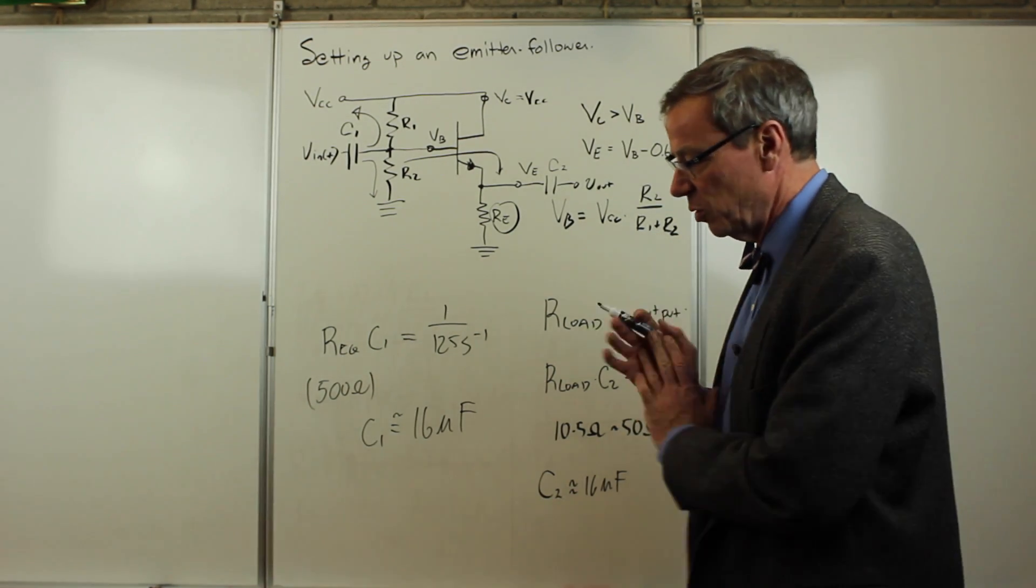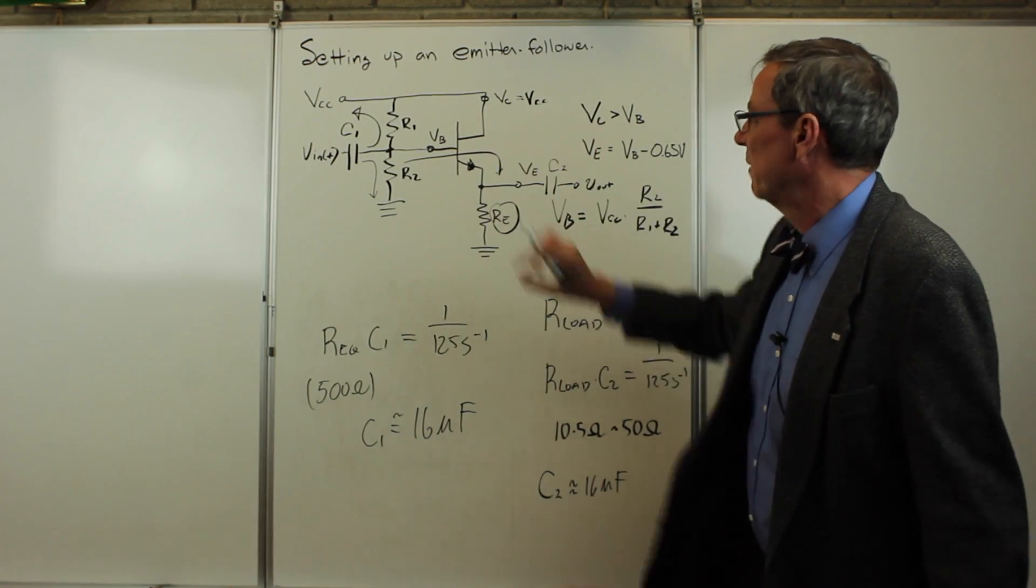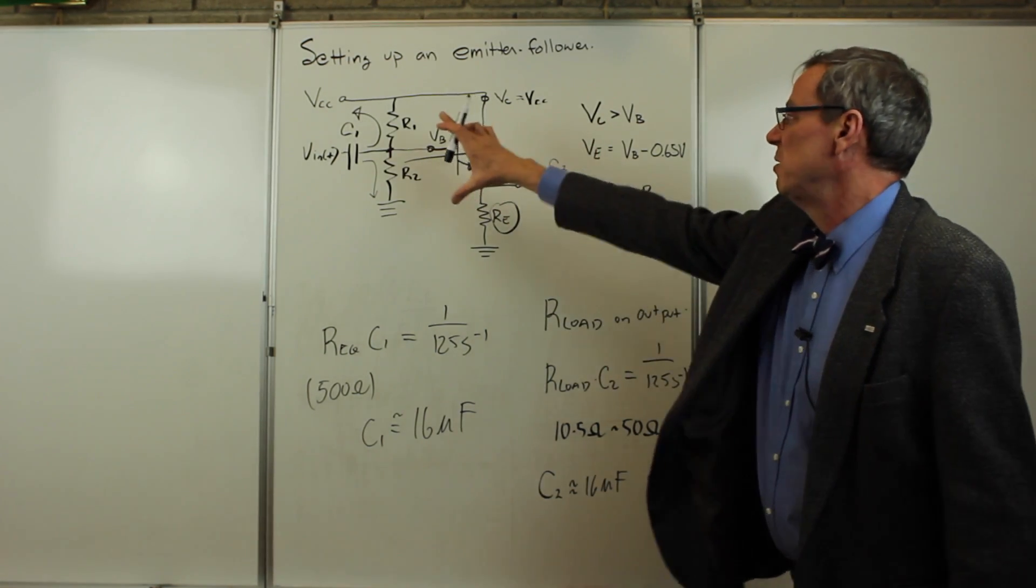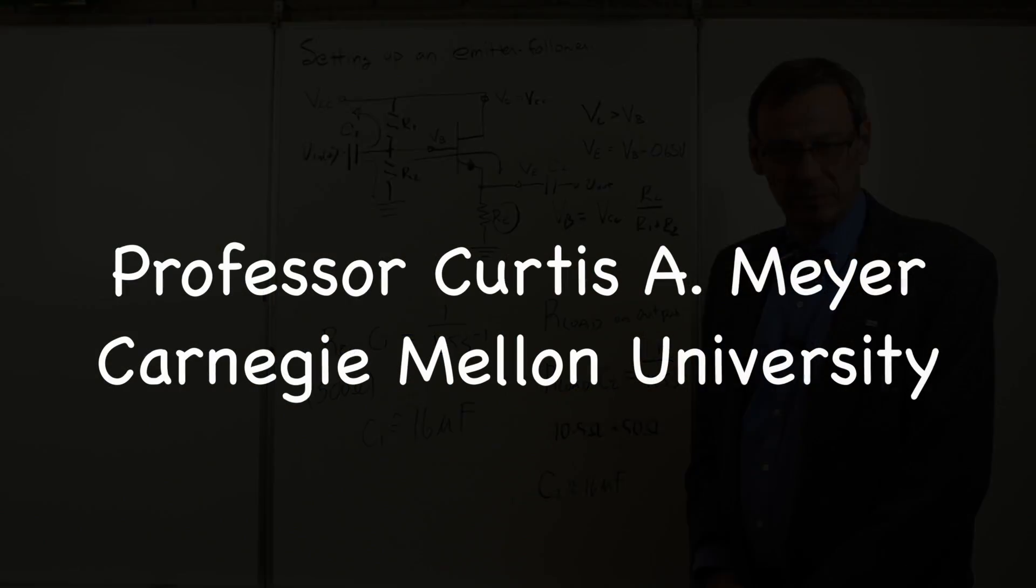That now lets us go through and choose components that will not burn out the transistor and let us use a 12 volt supply to build this emitter follower.